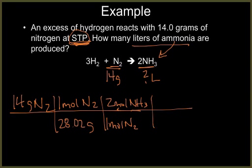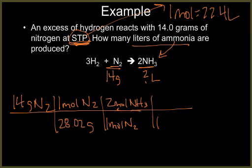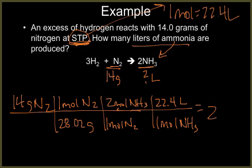This is our last step, where now, since we're at STP, we can use one mole of gas equals 22.4 liters of gas. So one mole of NH3 is equal to 22.4 liters of NH3. That'll end up with our final answer here. If we do the calculation, we end up with 22.4 liters of NH3.